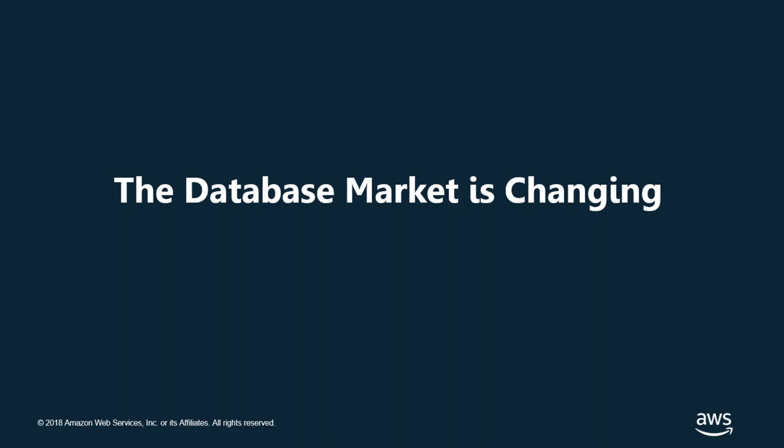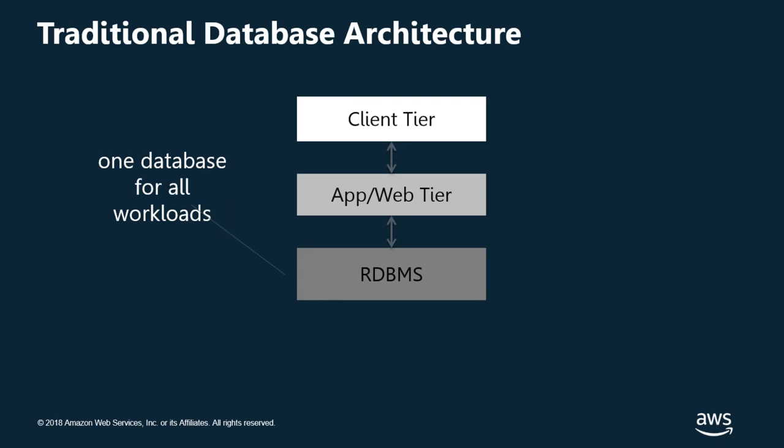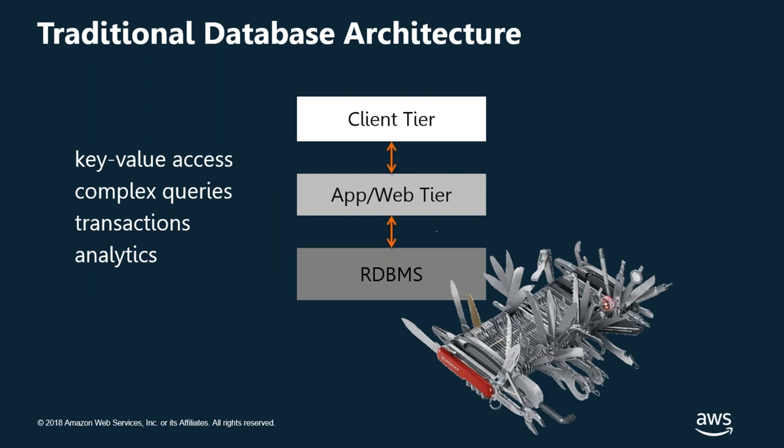The traditional approach to application architecture has a client tier — thick clients like Java or .NET — connecting to an application or web tier and then a database below that. The client could also be a browser. The idea was to put everything into a relational database, making it this massive Swiss Army knife capable of doing all different things, turning it into a huge monolithic beast expected to handle key-value access, complex queries and transactions, analytics, and even graphing.